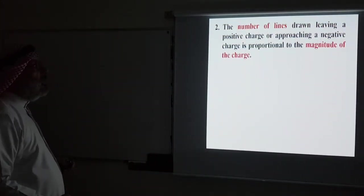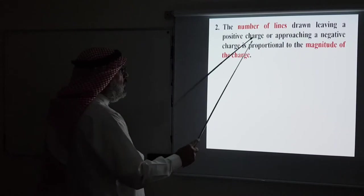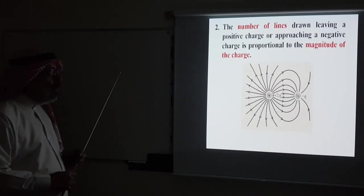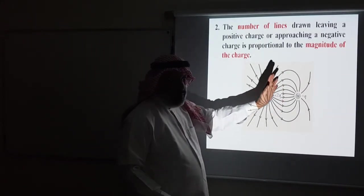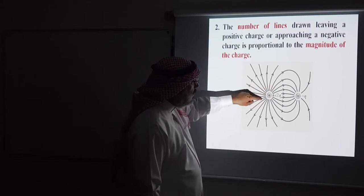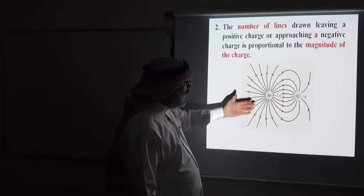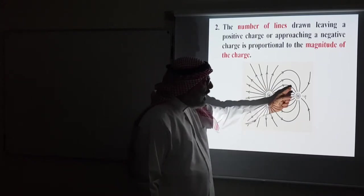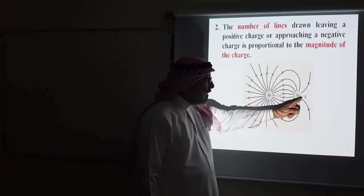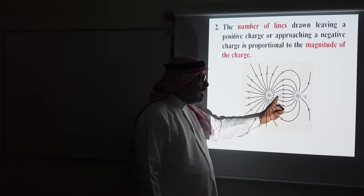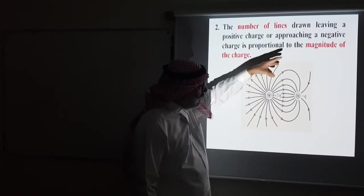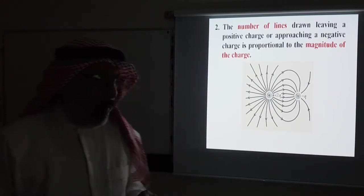Rule two: the number of lines leaving a positive charge or approaching a negative charge is proportional to the magnitude of the charge. If one charge has more field lines surrounding it than another, it is the stronger charge. For example, if one charge has double the number of field lines of another, its magnitude is double. Lines exit positive charges and terminate on negative charges according to their respective magnitudes.